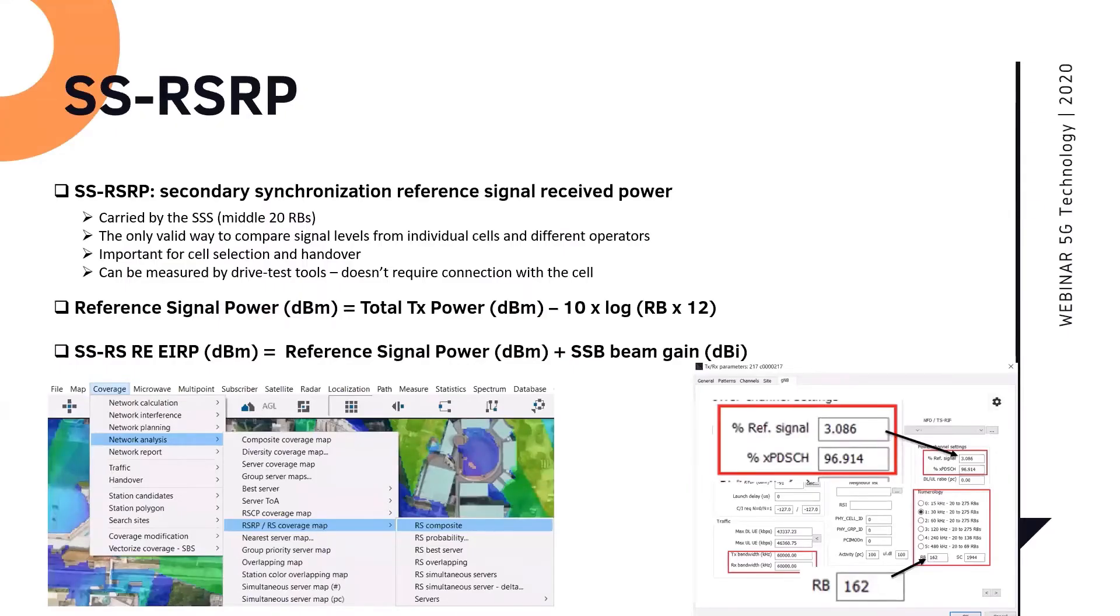So let's have a look here. So SSRSRP, what does it mean, SSRSRP? So in 4G, we only had RSRP. The one I'm really concerned about in my modeling is the SSRSRP, which is the Secondary Synchronization Reference Signal Received Power. Now this SSRSRP is carried by the SSS, which is the Secondary Synchronization Signal. This is the middle 20 RBs, 20 RBs in the middle of the channel. This is where the broadcast is happening.